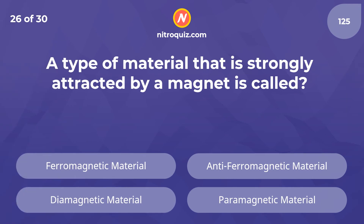A type of material that is strongly attracted by a magnet is called what? The answer is a ferromagnetic material.